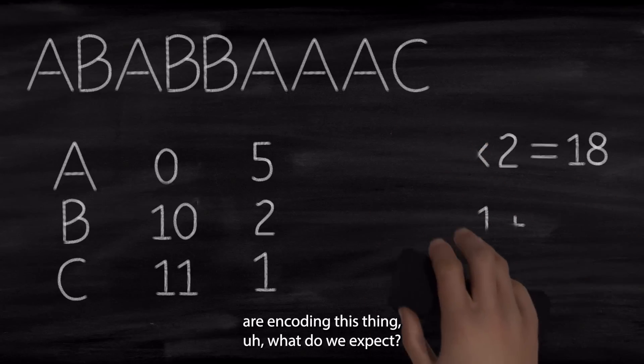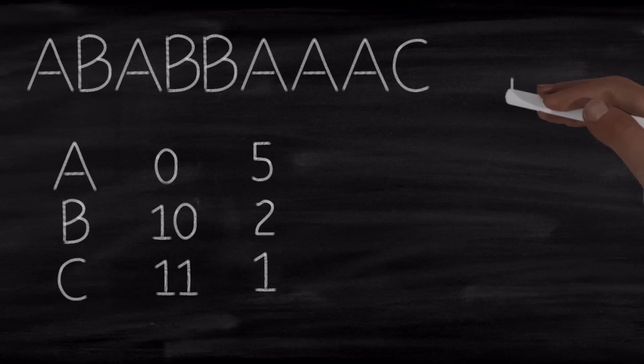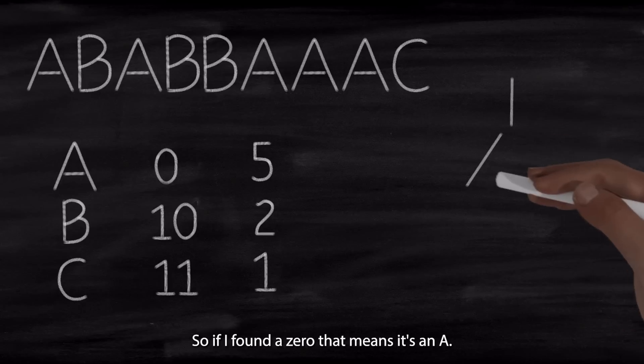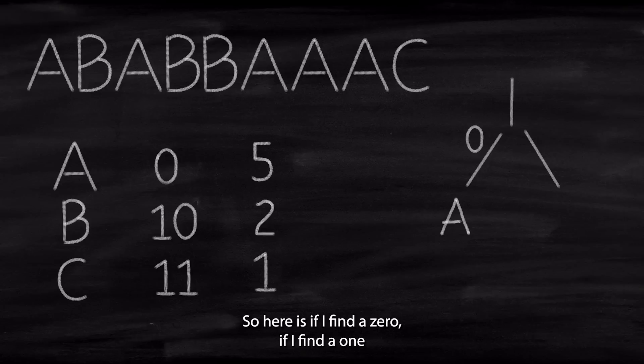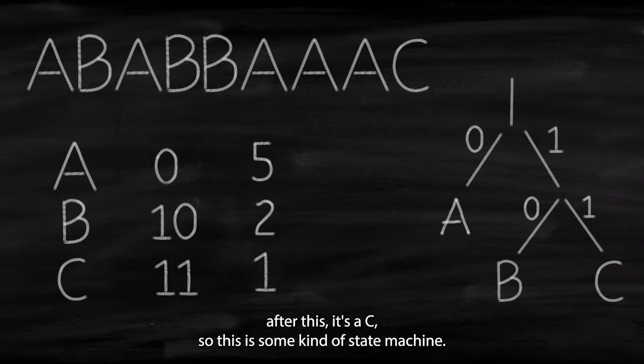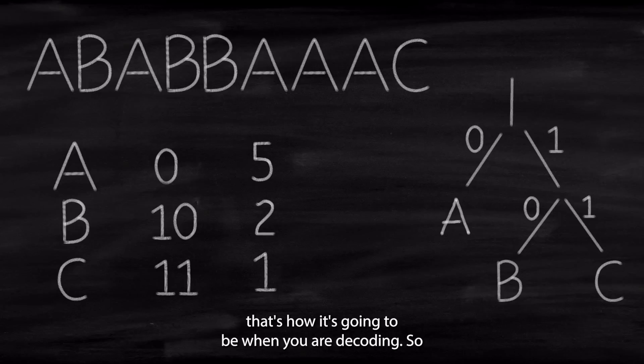So now if we are encoding this thing, what do we expect? If we are decoding, let's pretend this is like kind of a state machine. So I am going to decode now and I find a 0. So if I find a 0, that means it's an A. And that's it, like I just go back. If I find a 1, that means it's either a B or a C.